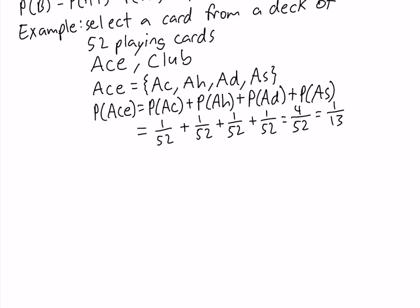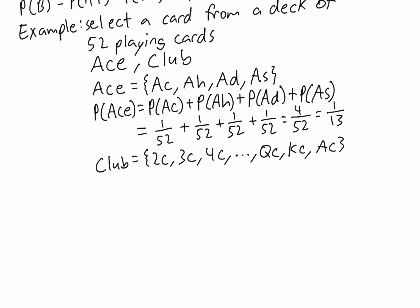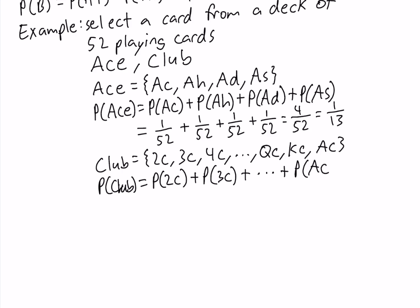Now let's look at the event of getting a club. The sample points in this event are all the different clubs, and there are 13 of them total: 2 of clubs, 3 of clubs, 4 of clubs, up to queen of clubs, king of clubs, and ace of clubs — 13 cards in total. To get the probability of getting a club, we simply add up the probability of each of these: P(2 of clubs) + P(3 of clubs) + ... + P(ace of clubs).